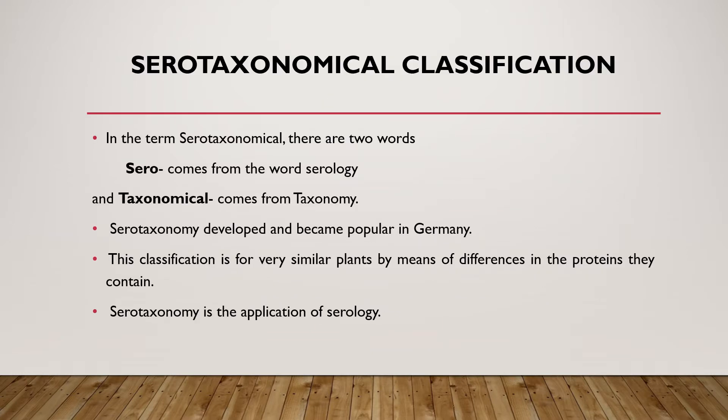Now, what is serotaxonomical classification? The term serotaxonomical is made up of two words: sero, which comes from serology, and taxonomical, which comes from taxonomy. Serotaxonomy was developed and first became popular in Germany and then in other countries.